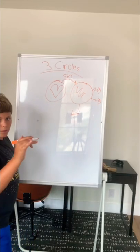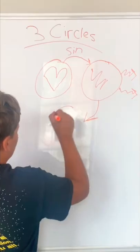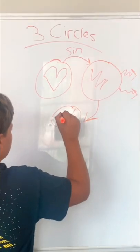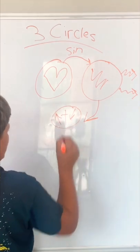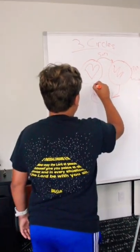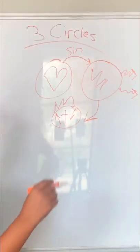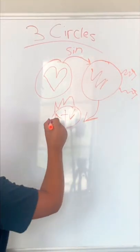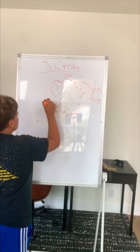So God loved us so much that he came down to earth, died on a cross, and rose from the dead. And when he died on that cross, he conquered sin. So if we go through Jesus, we can get back to God's original design.